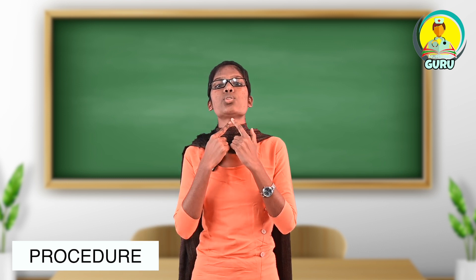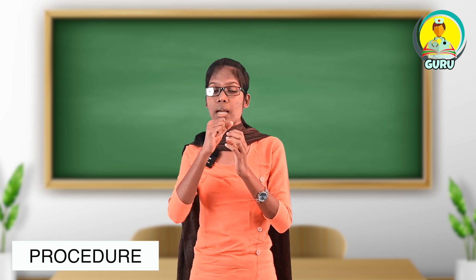For infants and children, the procedure is similar. Tilt the head slightly, chin up, pinch the nose, and provide mouth-to-mouth breathing. However, for chest compression in infants, use only two fingers on the xiphoid sternum area. The number of compressions and breaths remains the same as for adults.